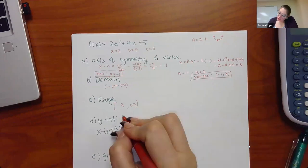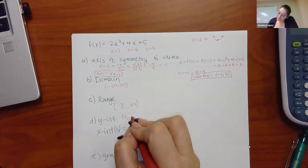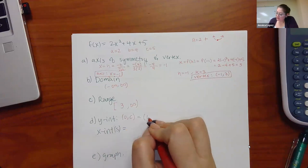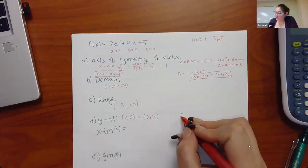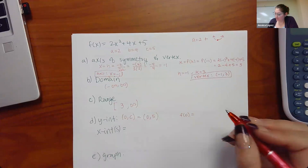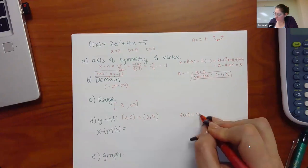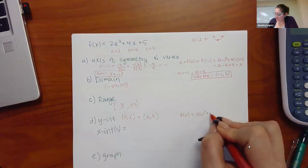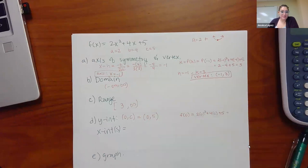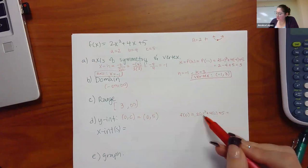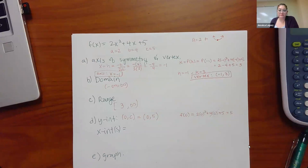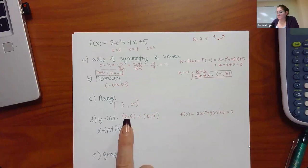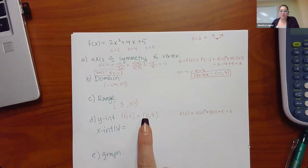The y-intercept is at (0, c) — since c = 5, the y-intercept is (0, 5). If you weren't sure, just plug in x = 0: 2(0) + 4(0) + 5 = 5. Same result. The x-intercept is the reverse — plug in y = 0 and solve for x, meaning set 0 = 2x² + 4x + 5.